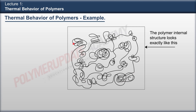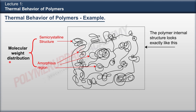Now if we see here, we can see some semi-crystalline structure. This is the amorphous structure, and that is how we can say that the molecular weight distribution is there in any polymeric structure.